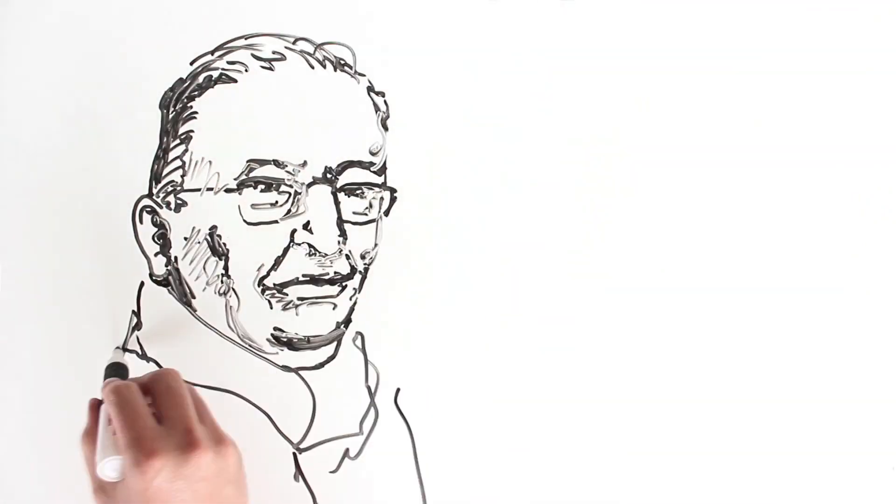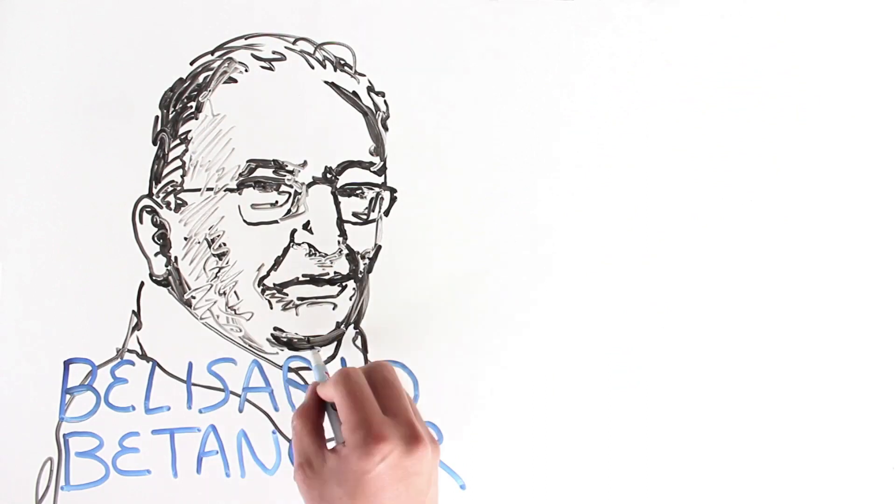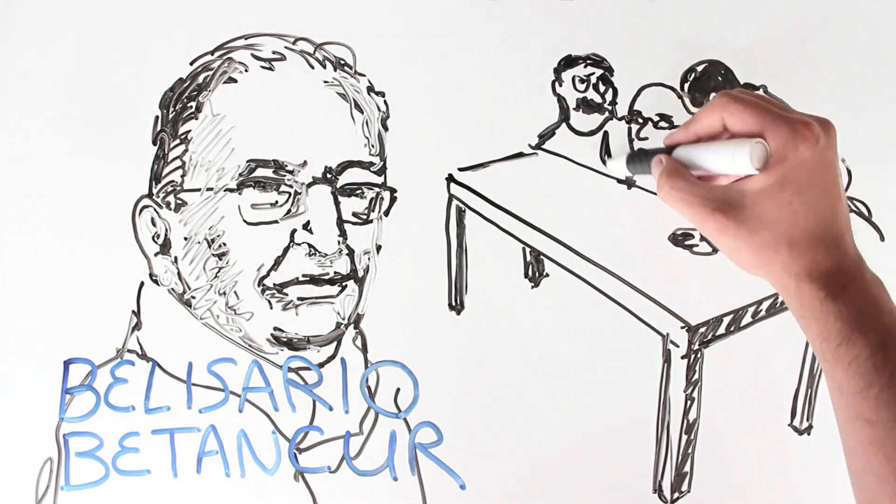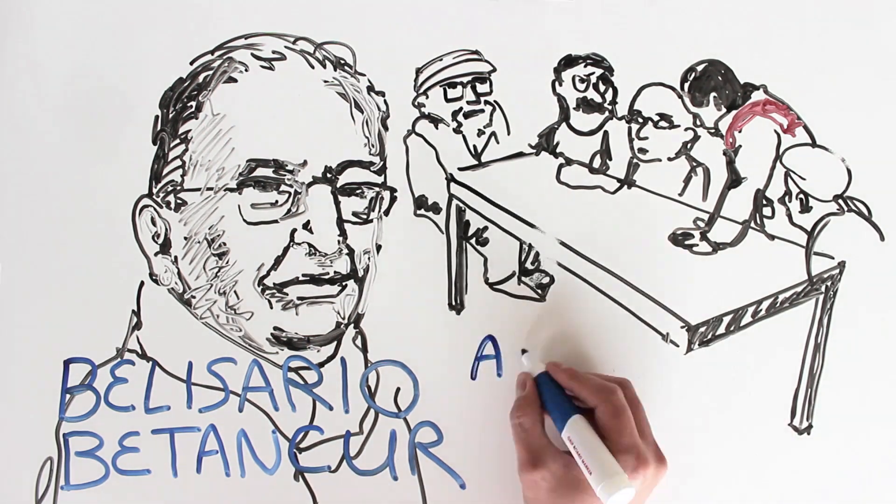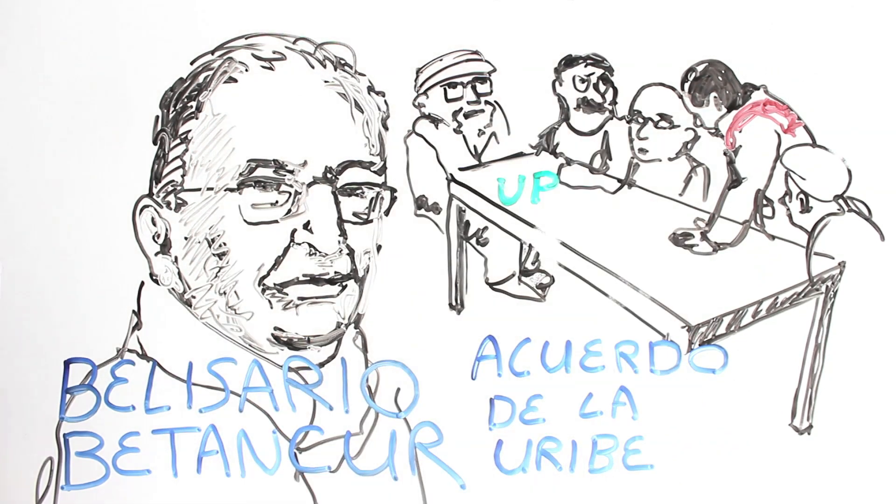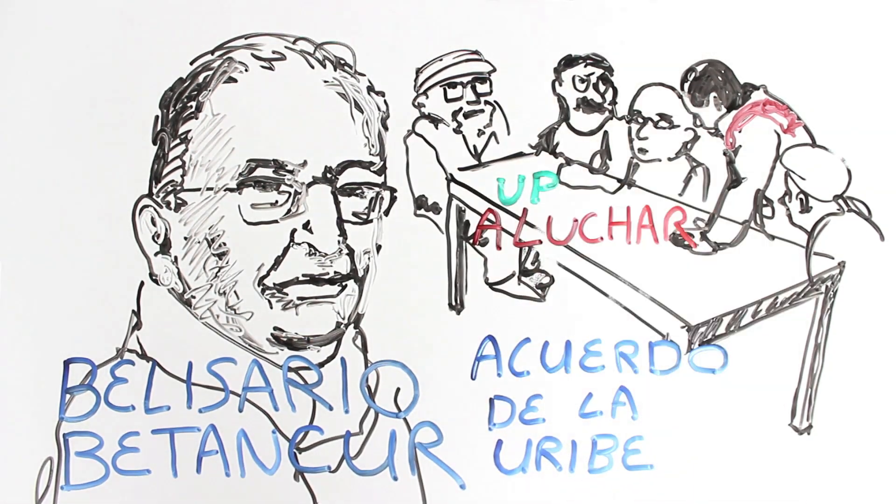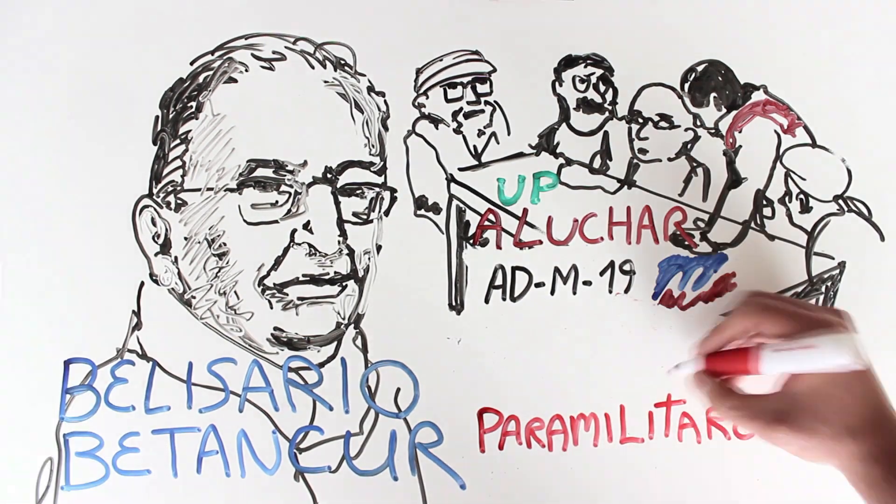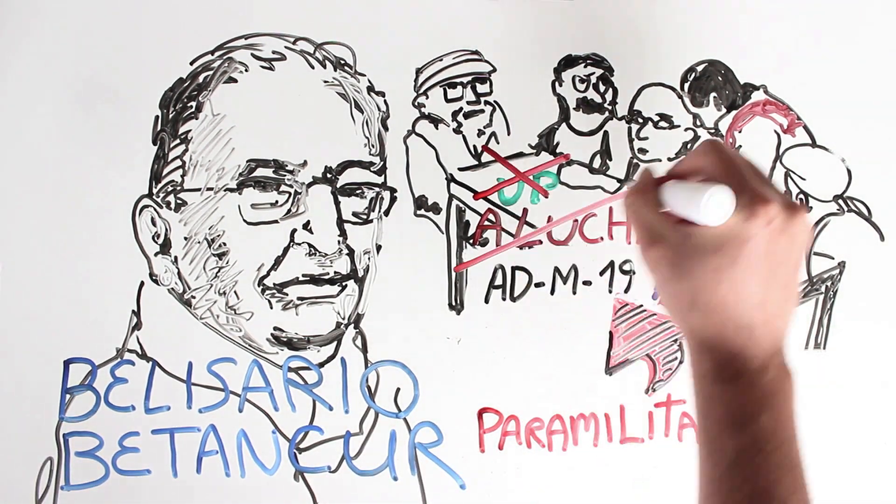Belisario Betancur intentó un proceso de paz que tiene como hito el Acuerdo de la Uribe, del que surgieron movimientos políticos que responderían a un proceso de ampliación de la democracia restringida que se heredó del Frente Nacional. Apareció la UP a luchar, el M19 y otros movimientos políticos que progresivamente fueron exterminados por grupos paramilitares y fuerza pública encubierta.